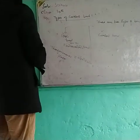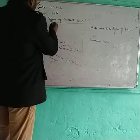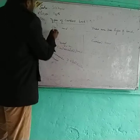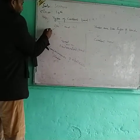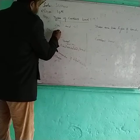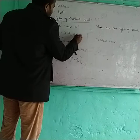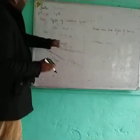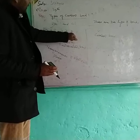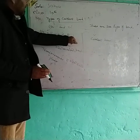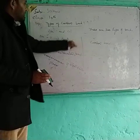For example, we will take two elements: sodium and chlorine. Sodium has atomic number 11 and its electronic configuration is 2, 8, 1. This means the first orbit contains two electrons, the second orbit contains eight electrons, and the third orbit contains one electron. So its valence electron is 1 and its valence is 1.